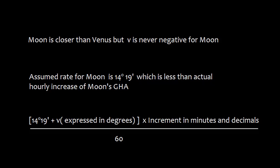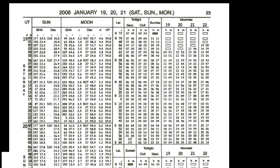Now we will talk about Moon. Moon is further closer than Venus. But why the V correction is never negative? Because the assumed rate is not 15 degrees. Rather, we have taken the value as 14 degrees 19 minutes so that the actual hourly angle is always positive. So you can either find out from the formula which says 14 degrees 19 minutes plus V expressed in degrees plus increment in minutes and decimals divided by 60 or you can take from the Almanac.